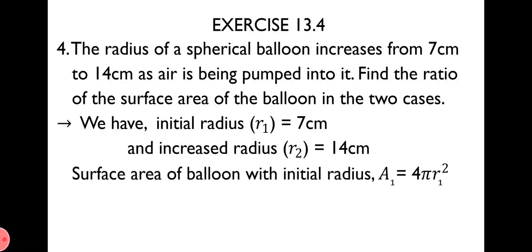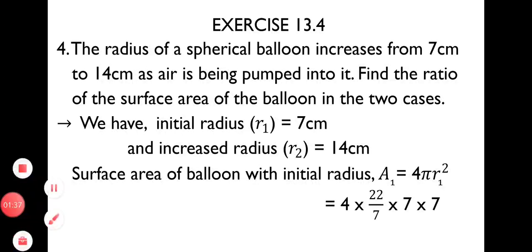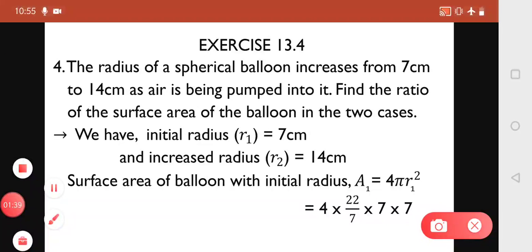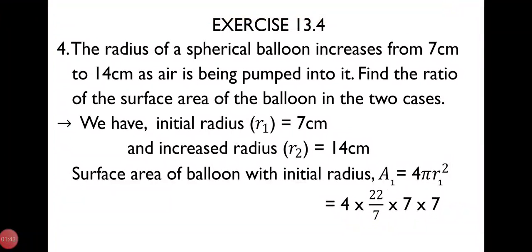Surface area of the balloon with initial radius: A1 = 4πr1². Inserting the values, we get equal to 4 × (22/7) × 7 × 7. Here we can cancel 7, and when we multiply the remaining numbers, we get A1 = 616 cm².